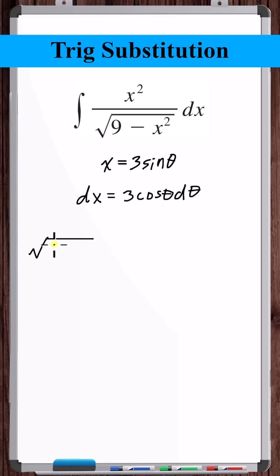So now if we substitute into the square root of nine minus x squared, we get square root of nine minus nine sine squared theta. Factor out of nine. One minus sine squared theta is cosine squared theta. Applying the square root, we've got three cosine theta.